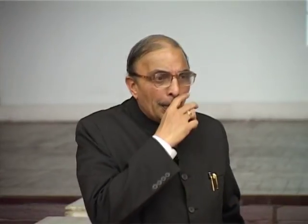For example, subsequence 1, 4 adds up to 5; 1, 4, 1 adds to 6; 6, 5, 1, 7 adds to 19. Each subsequence sums to some value. The question is to find which subsequences add up to a given value — say 10, 15, 23, or 2000. You must go through each and every subsequence to determine this.